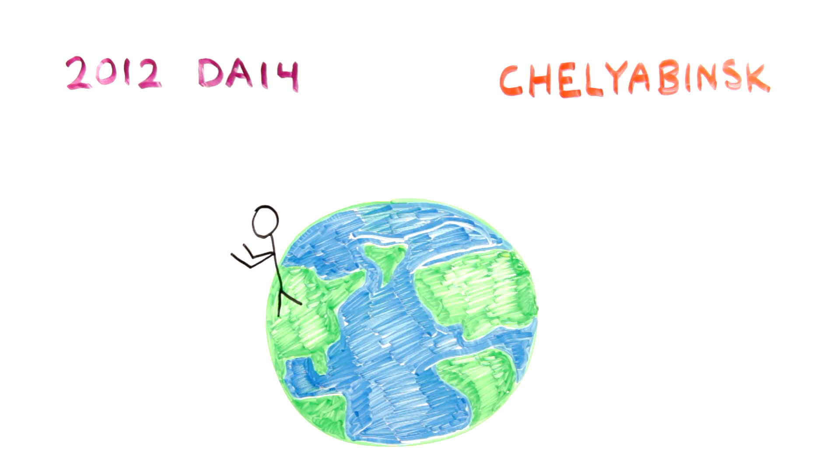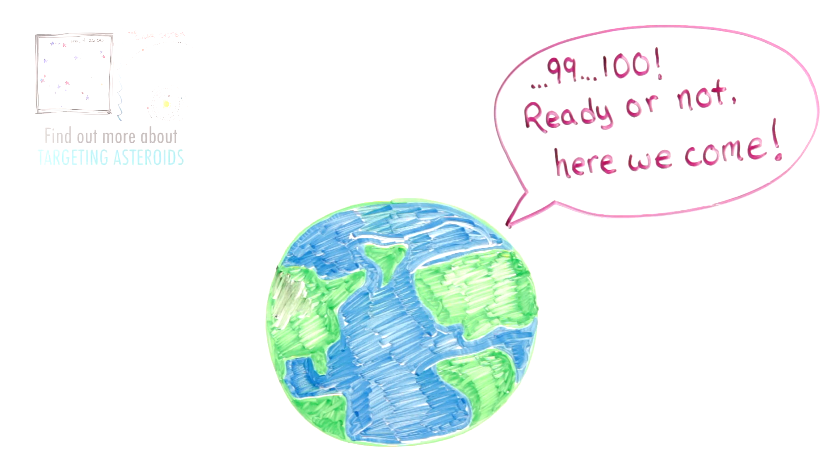How can scientists tell if a near-Earth object is going to be a very near-Earth object, or if it's just going to fly by? First, they have to find the asteroids.